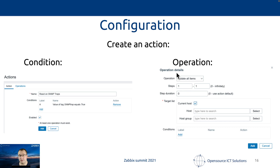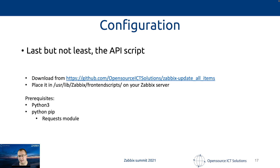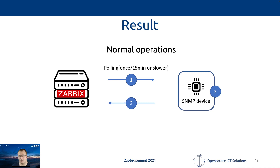With that in place — if a trap is received, this action will take place and try to update all items using a Python script. That Python script is not in place yet, but I'm going to point you to our GitHub page where there is a dedicated repository called 'Zebix update all items'. Get the script from there, place it in a certain directory — something like /usr/lib/zabbix/ or whatever directory you want — then update the URL and add the API token. The script relies on Python 3, and we need pip to install the requests module for making those API calls.